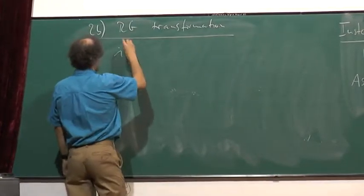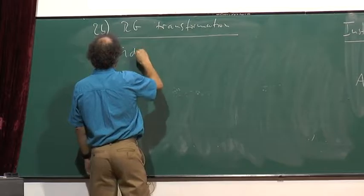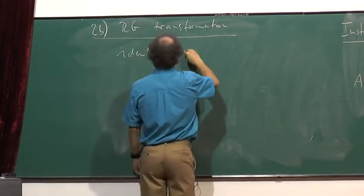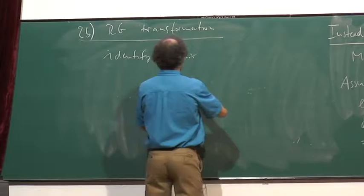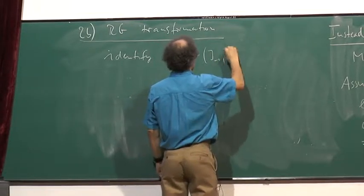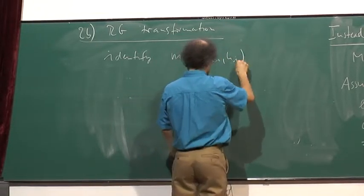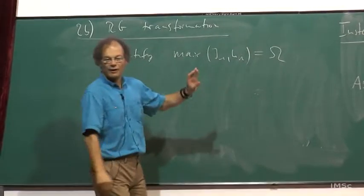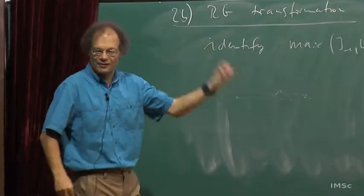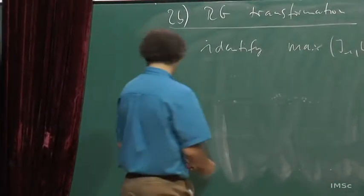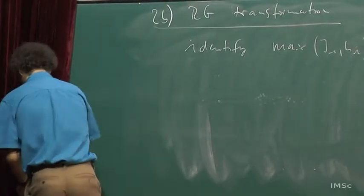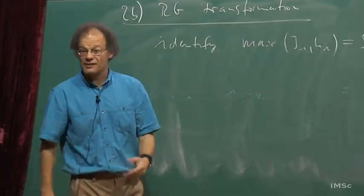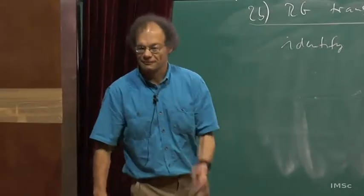Now let's actually do the RG transformation. We go through our chain and find the largest of all energies — we call this Omega, which will be our RG energy scale. There are two cases: the largest energy could either be a J (a bond) or an H (a field). Let's look at these two cases separately.